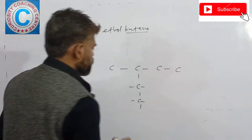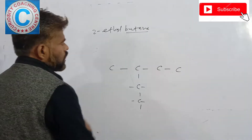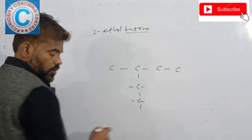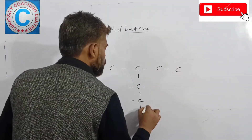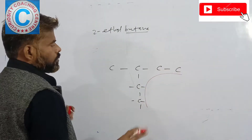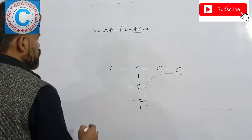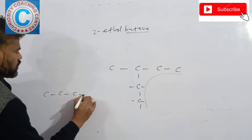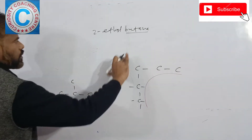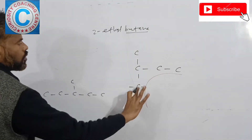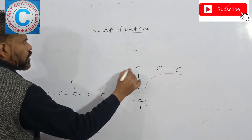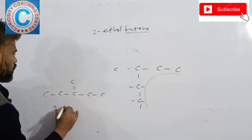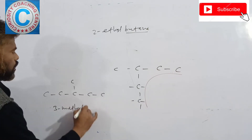Now, when we draw this structure, we get either this arrangement or that one. The question is: what is the longest chain — 4 carbons or 5 carbons? The correct answer is that the longest chain becomes 5 carbons. This is actually C-C-C-C-C, which is supposed to be a straight chain. So 2-ethyl-butane is nothing but 3-methylpentane.